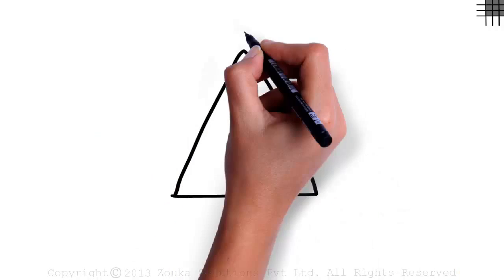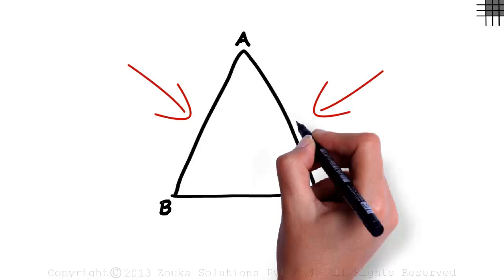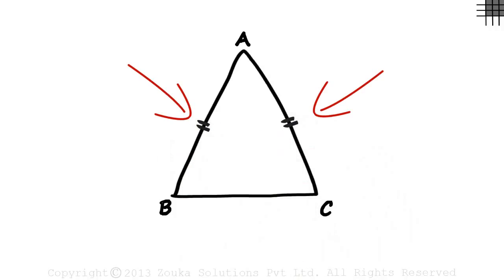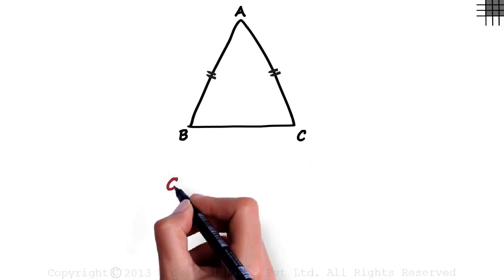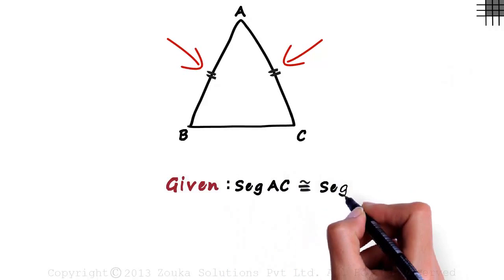We redraw triangle ABC and jot down all the data we have. Lengths of these two sides are equal as it's an isosceles triangle. The first thing we should do before we prove something is write down all the data that has been given to us. We have been given that segment AC is congruent to segment AB.